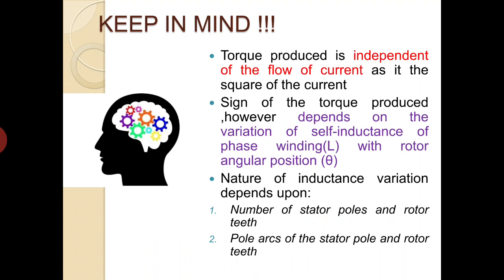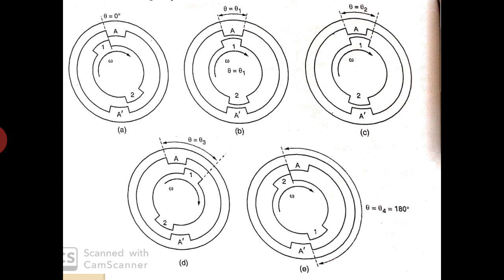For understanding the self-inductance variation with respect to the rotor position, we refer to the figure in this slide. In figure A, the rotor is moving in a clockwise direction and the rotor teeth are just coming from pole A and A', corresponding to θ = 0°. Since the air gap is maximum at this position, reluctance is maximum, so inductance is at its minimum. In figure B, maximum overlapping of stator pole and rotor teeth is shown. Air gap is minimum, and inductance increases from minimum to maximum value as the rotor rotates through an angle from 0° to θ₁.